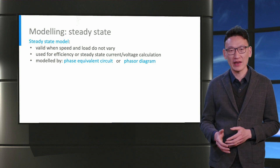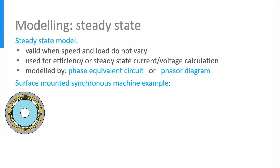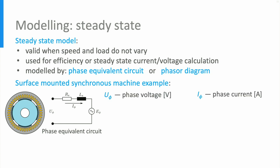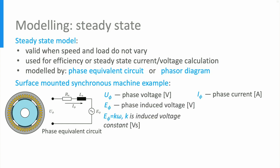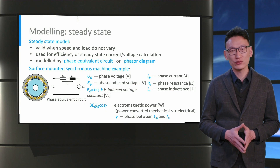Let's take the example of a surface-mounted synchronous machine, where permanent magnets are mounted on the surface of the rotor. The phase equivalent circuit of the machine is shown, where U-phi is the phase voltage and I-phi is the phase current. E-phi is the phase induced voltage, which is proportional to the rotor speed multiplied by the induced voltage constant k. R-s is the phase resistance and L-s is the phase inductance. The single-phase electromagnetic power can be calculated as E-phi times I-phi times cosine gamma, where gamma is the phase angle between E-phi and I-phi. For a three-phase machine, the total electromagnetic power is three times that value.